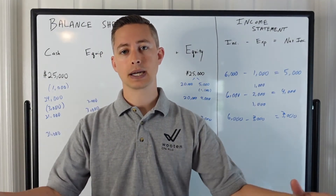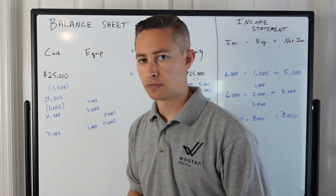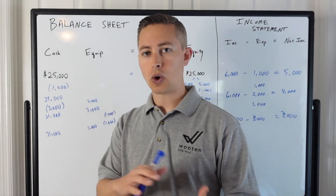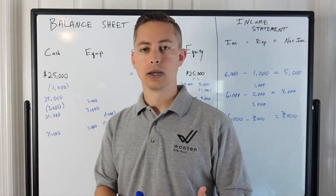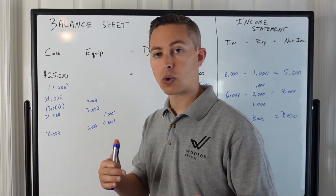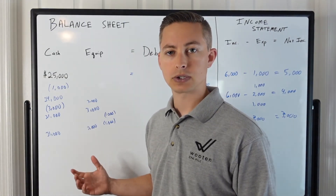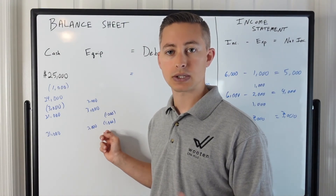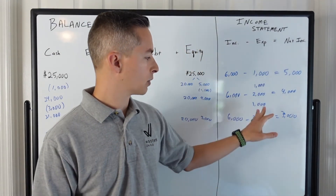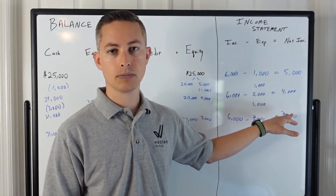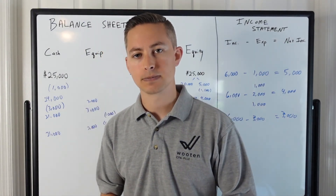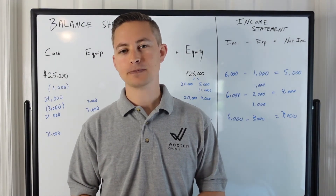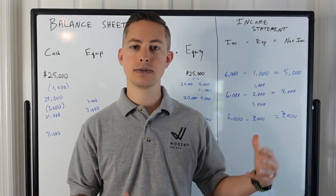There are two other provisions in the tax code: bonus depreciation and Section 179 depreciation. These are two different ways where, if you qualify, you can choose to write the full $3,000 off in the first year. So in many situations, instead of spreading depreciation over three years, you can take $3,000 of depreciation expense in year one, putting the full amount on your income statement and reducing your taxable income from $3,000 down to $1,000 — saving you taxes now.